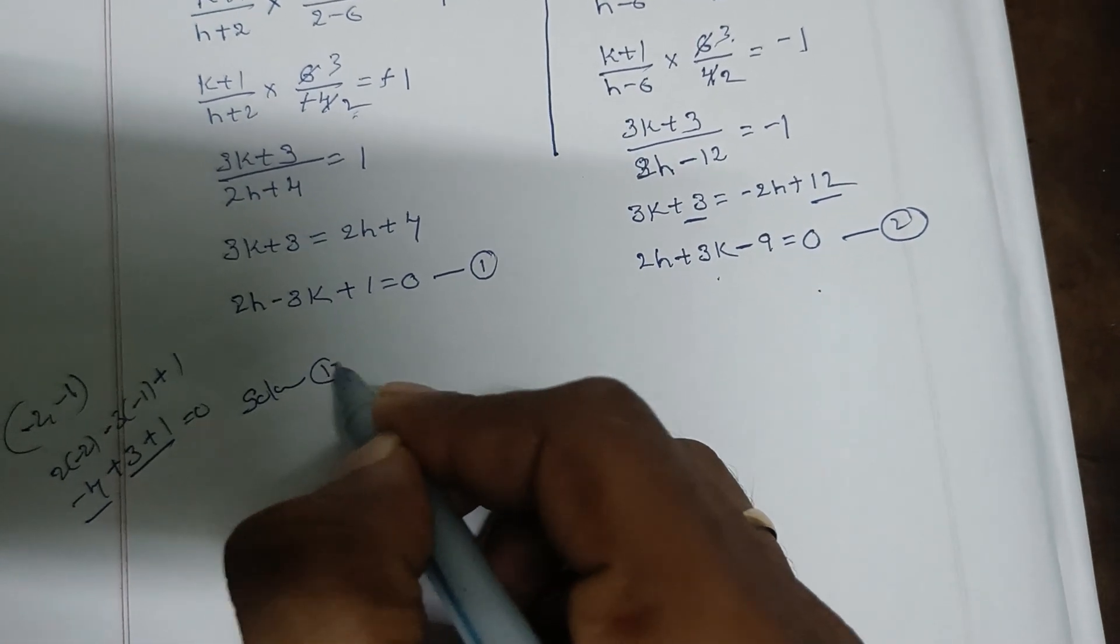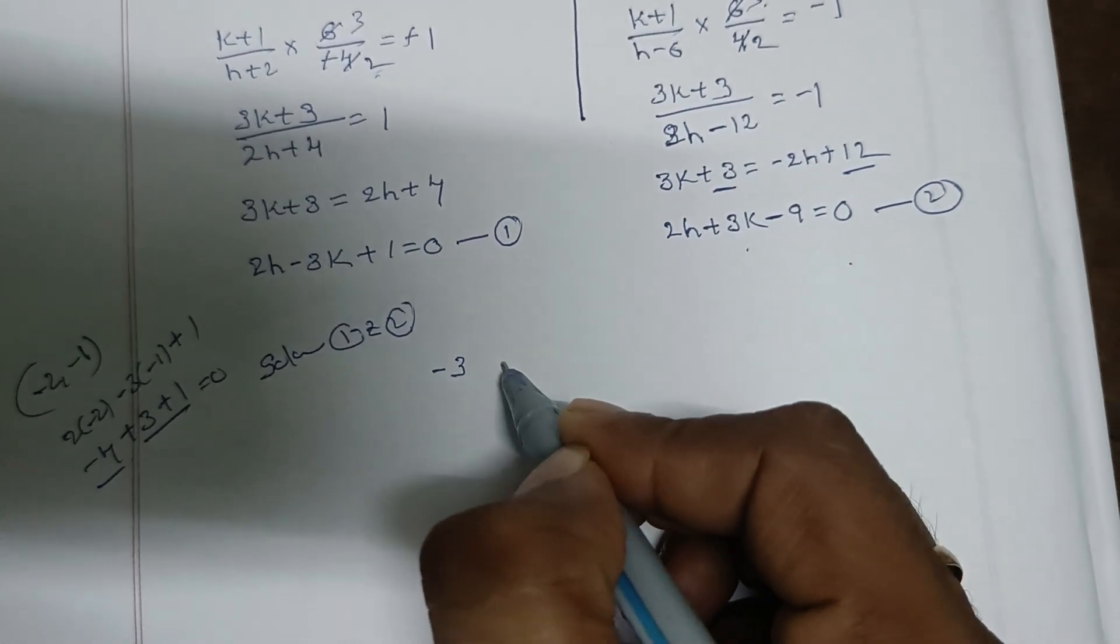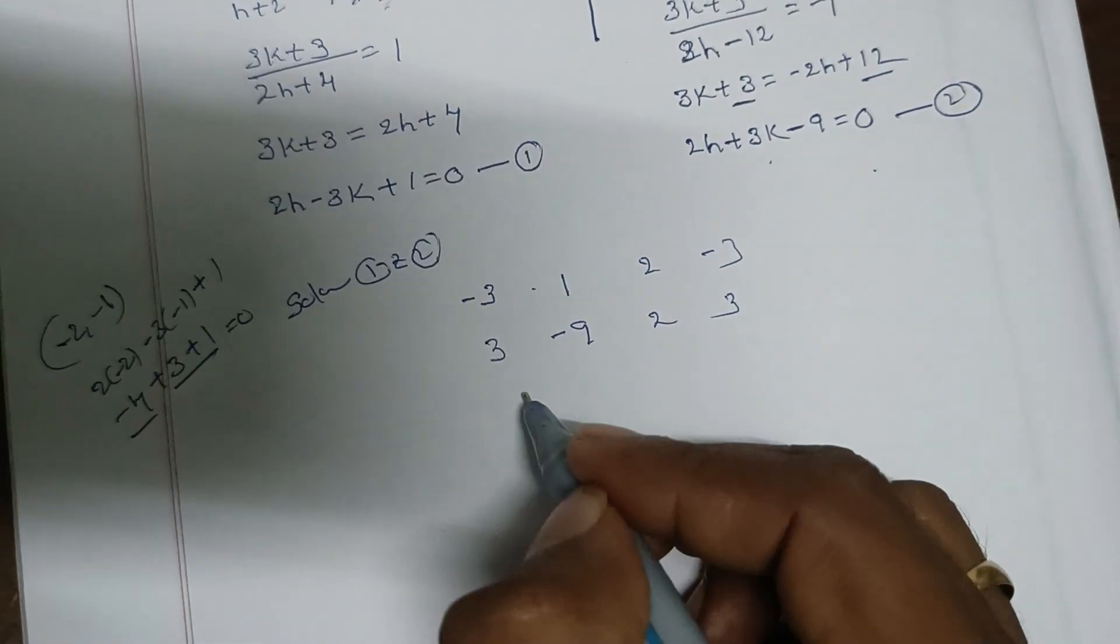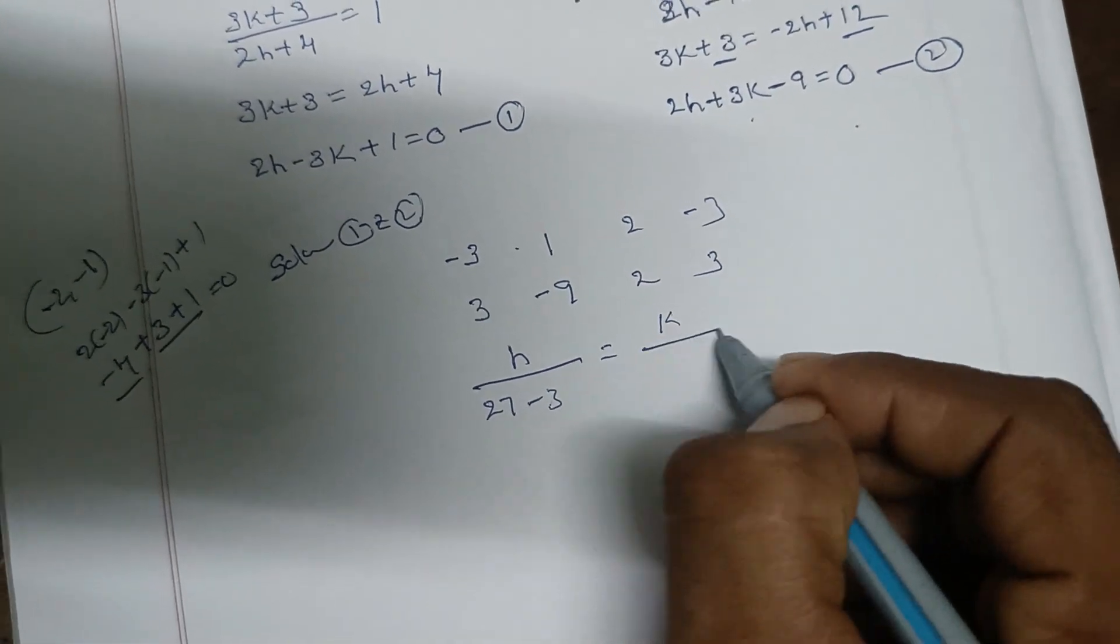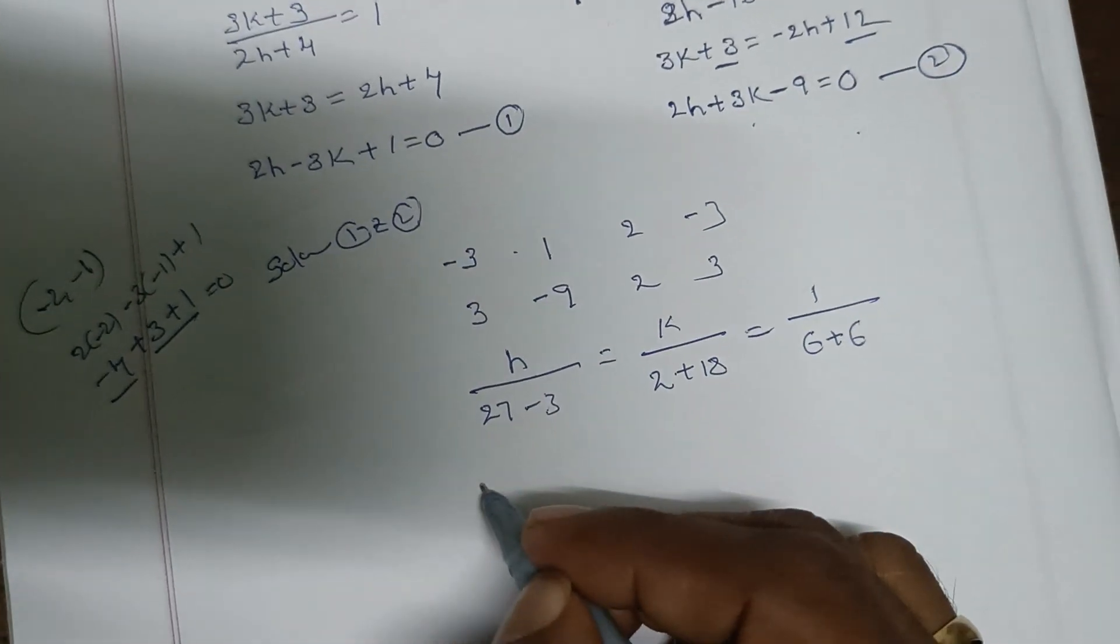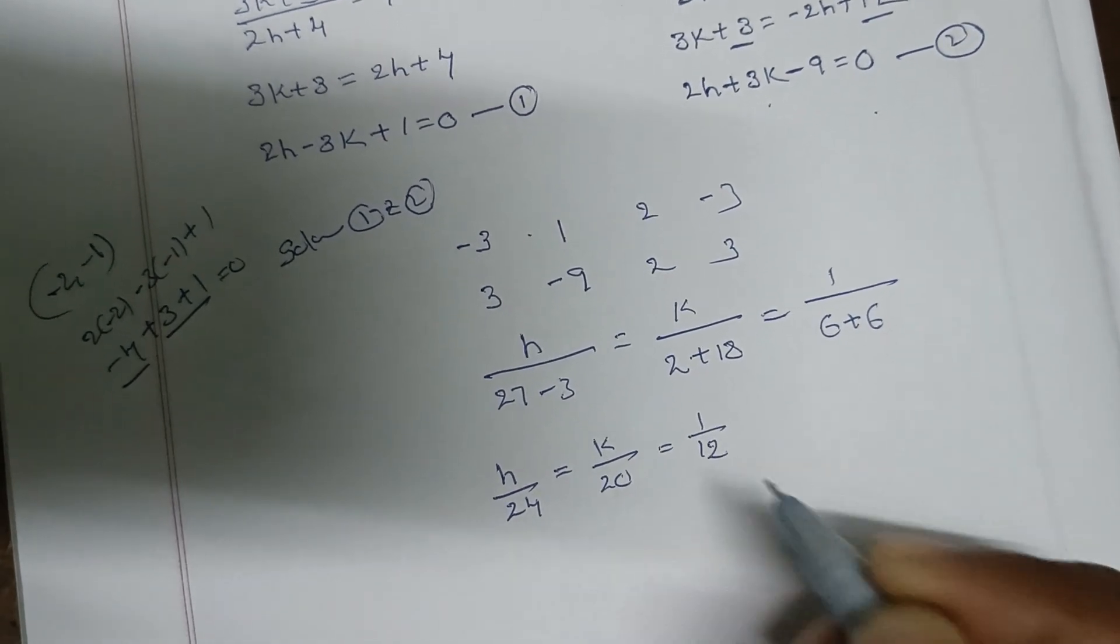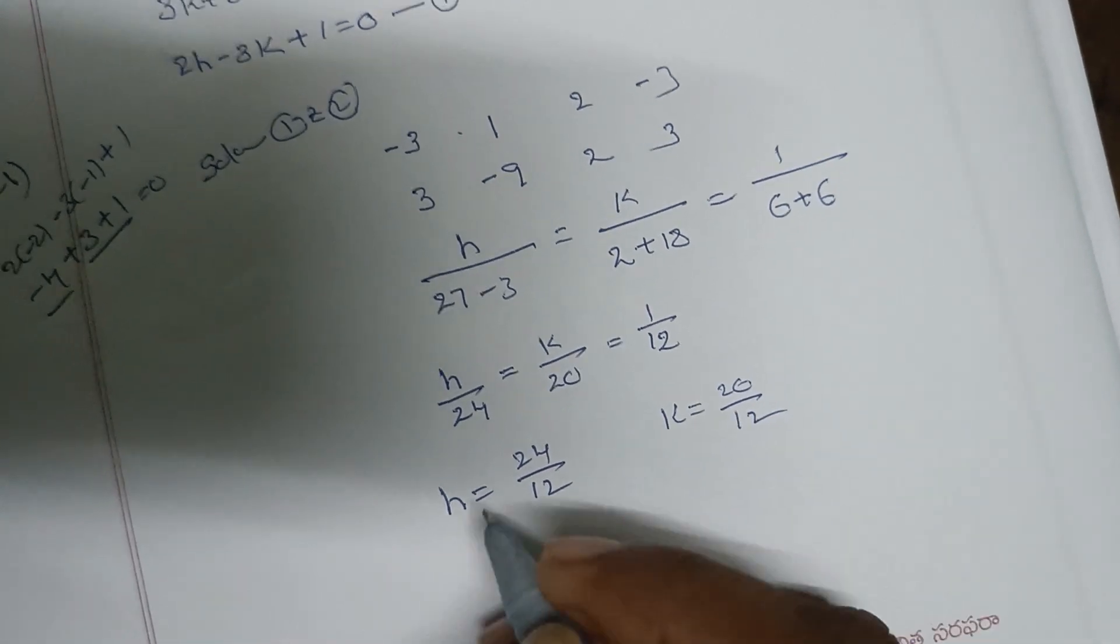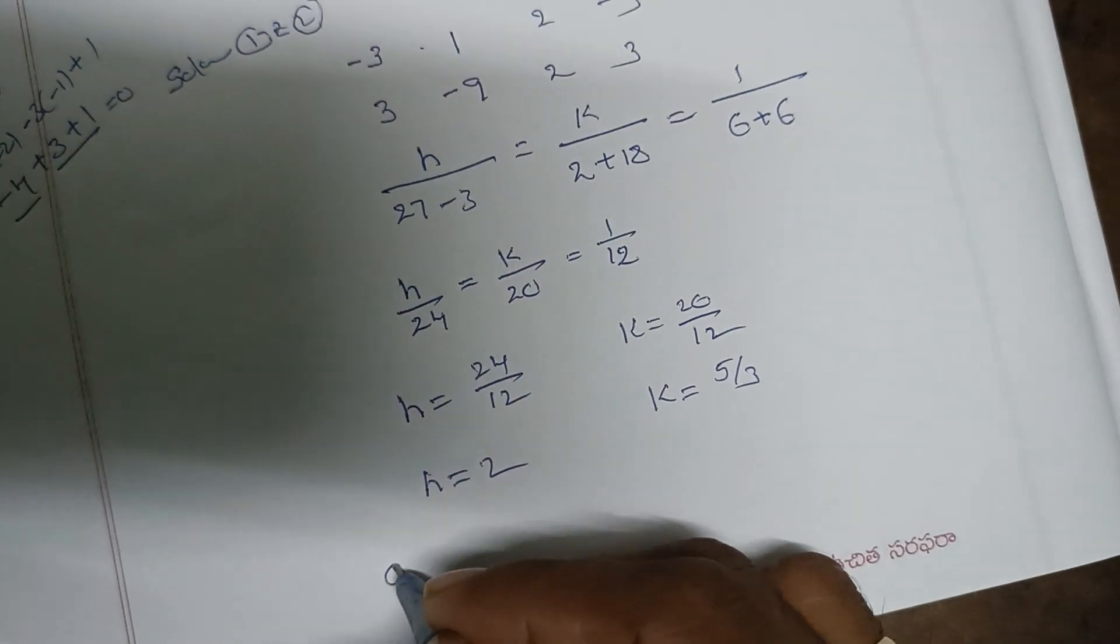Now solving equations 1 and 2: From the system of equations, using elimination or substitution method, we get h/24 = k/20 = 1/12. Therefore, h = 24/12 = 2, and k = 20/12 = 5/3.